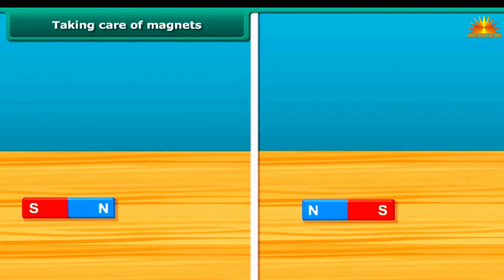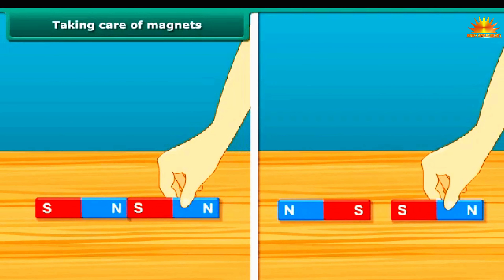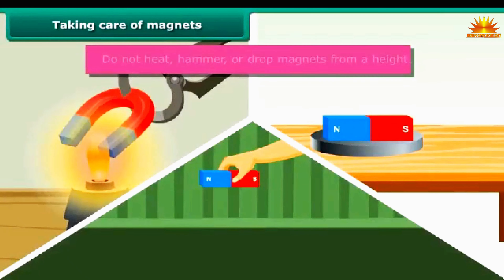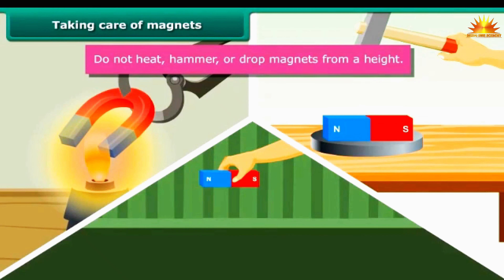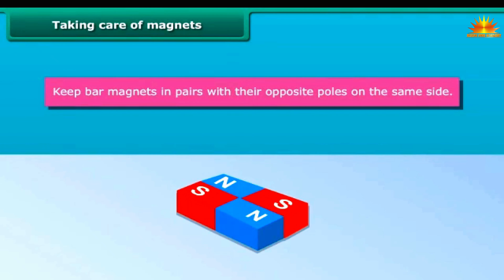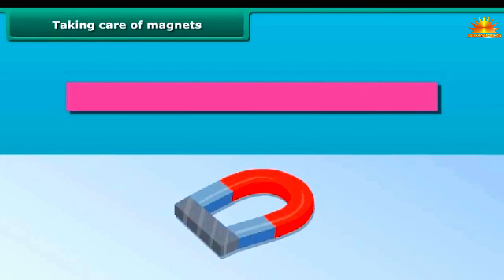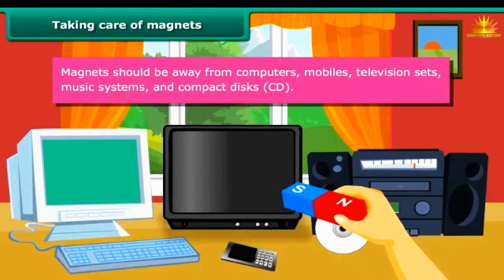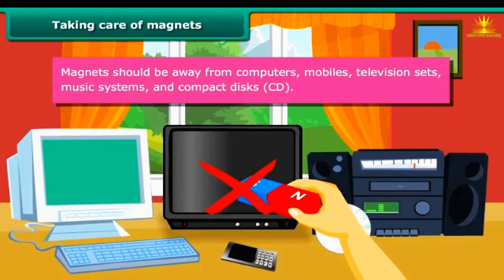Taking care of magnets. We are now aware of the attraction and repulsion properties of a magnet. To keep magnets safe and in working conditions, follow these guidelines. Do not heat, hammer, or drop magnets from a height — they will lose their property if done so. Keep bar magnets in pairs with their opposite poles on the same side. Use wood to separate them. Keep a piece of iron across the poles of a horseshoe magnet. Magnets should be kept away from computers, mobiles, television sets, music systems, and compact discs.